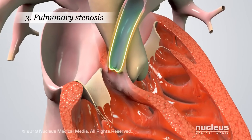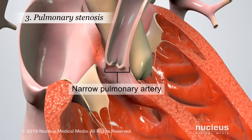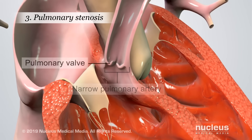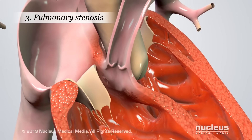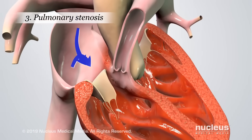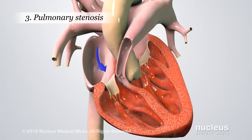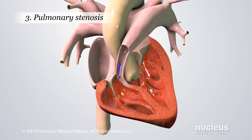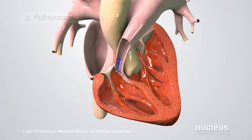Pulmonary stenosis means that the main pulmonary artery is narrowed and the pulmonary valve doesn't open all the way. As a result of the narrowing, less blood reaches the lungs.